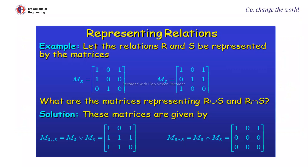With respect to matrix form: for the union of two relation matrices, wherever ones are present in either matrix, you copy a 1 in the union result. For intersection, wherever both matrices have a 1, there only you put a 1. This is how you can compute union and intersection using matrix representation.